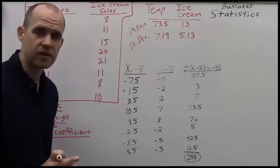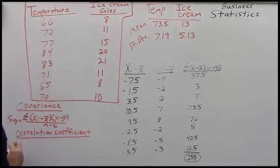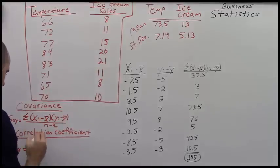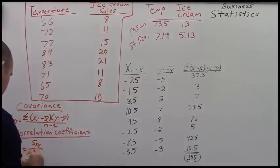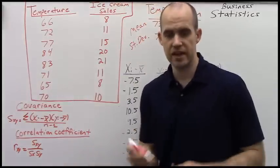And this is denoted by s of xy. That's our covariance. The correlation coefficient is similar to it. This is denoted as r of xy equals the covariance that we find above divided by the standard deviation of x times the standard deviation of y. Hopefully you can see that down there.